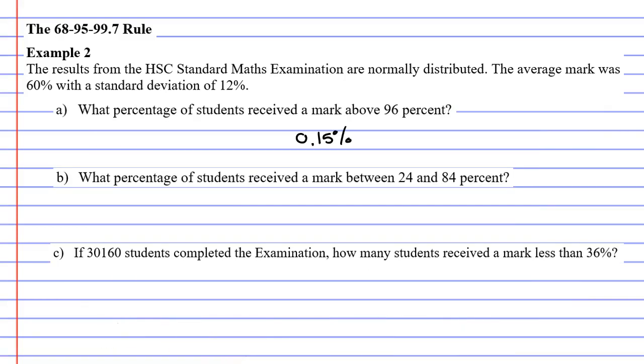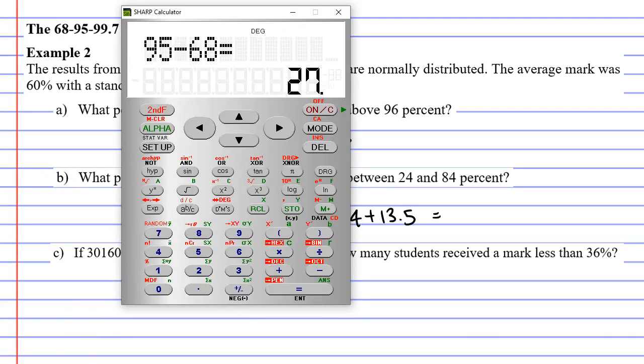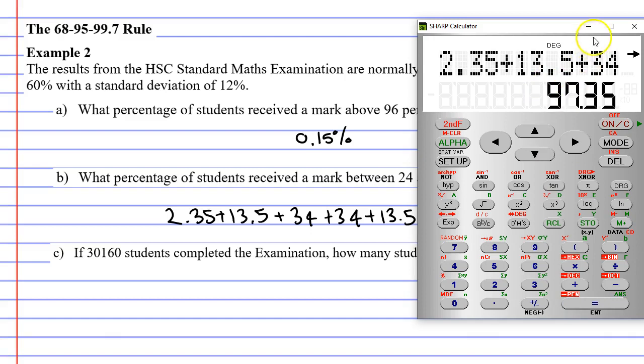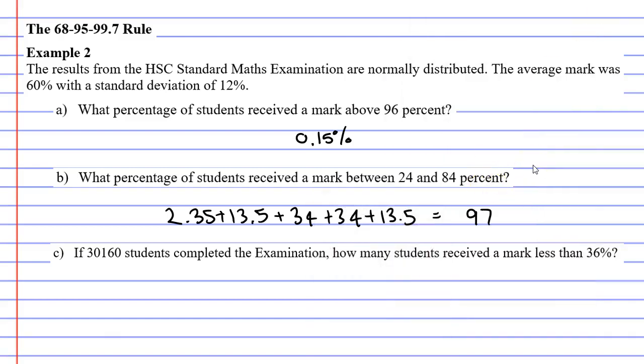We have 2.35% plus 13.5% plus 34% twice plus 13.5% again. Bringing up our calculator we have 2.35% plus 13.5% plus 34% plus 34% again plus 13.5% giving us 97.35%. So 97.35% of the students received a mark of between 24% and 84% in this exam.